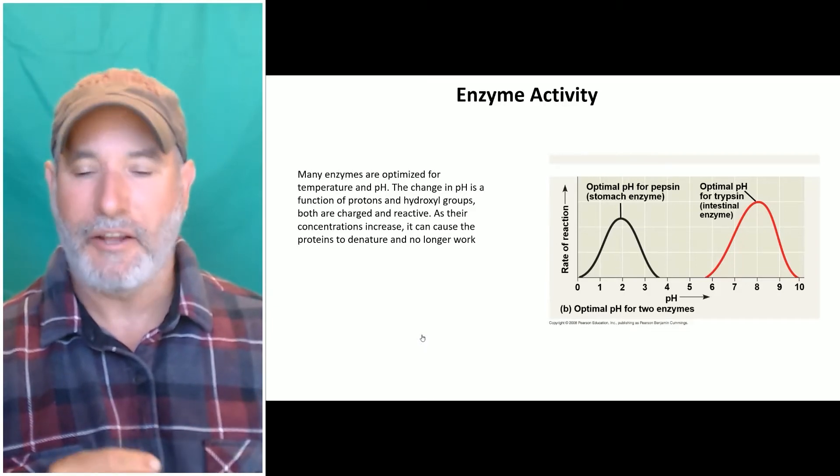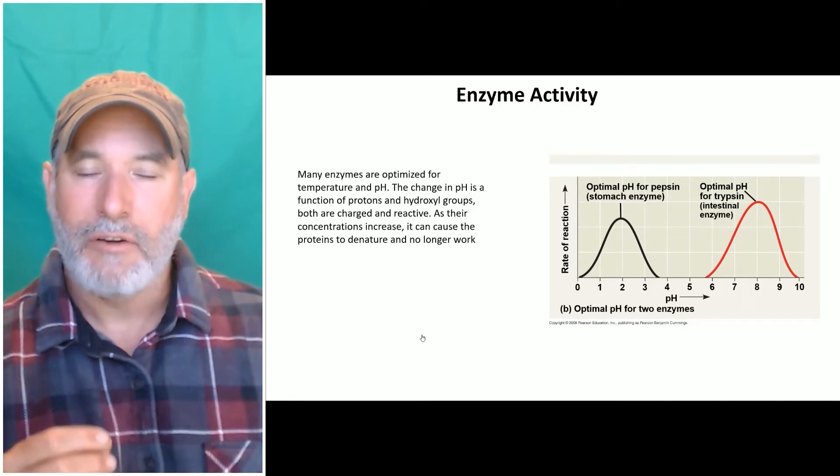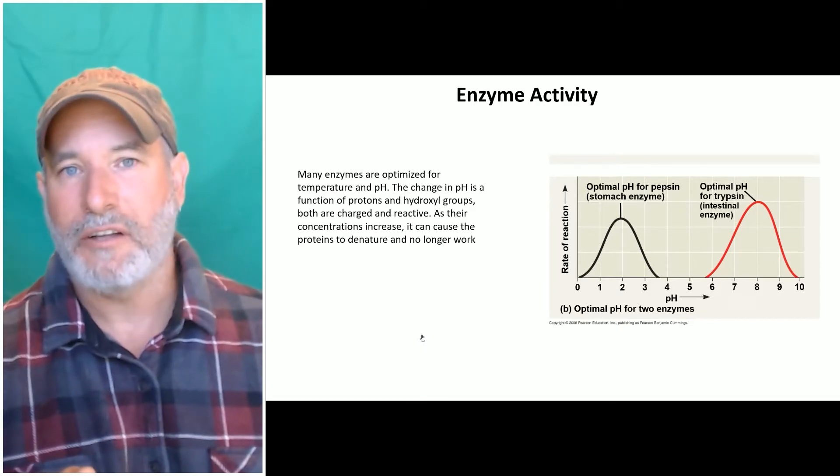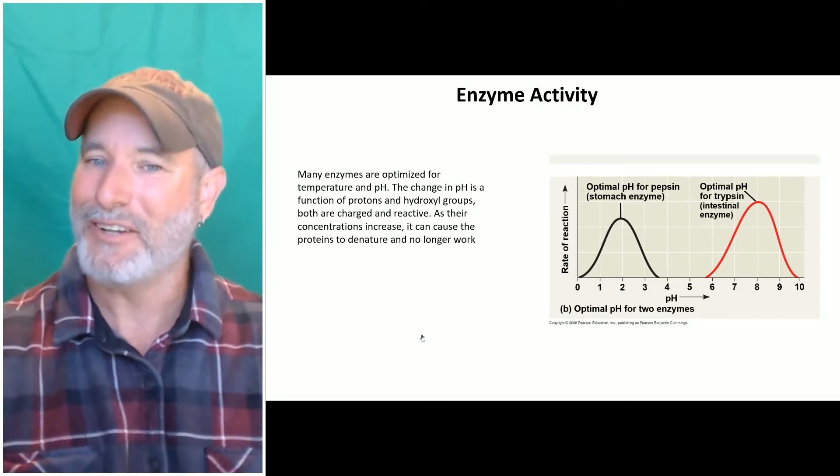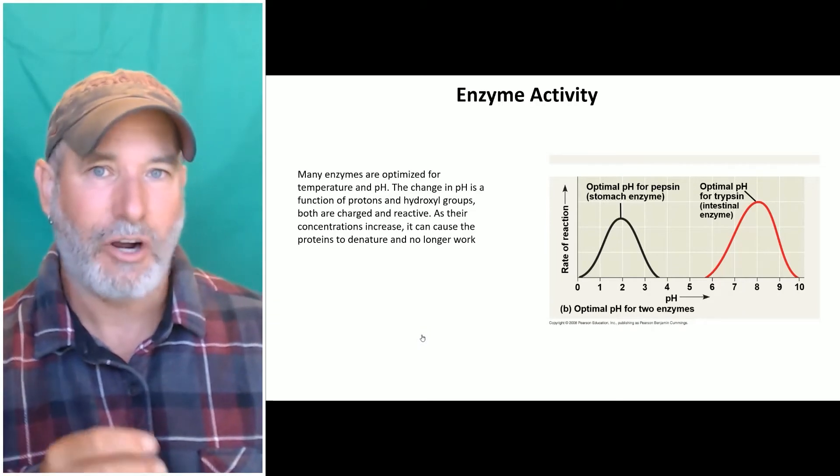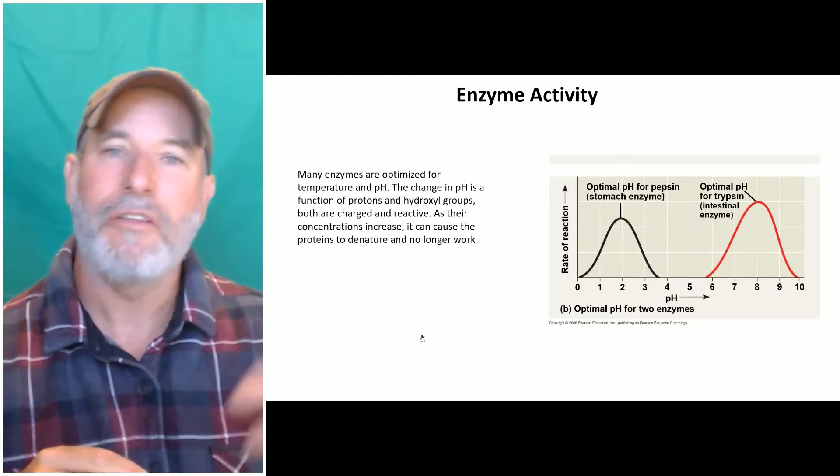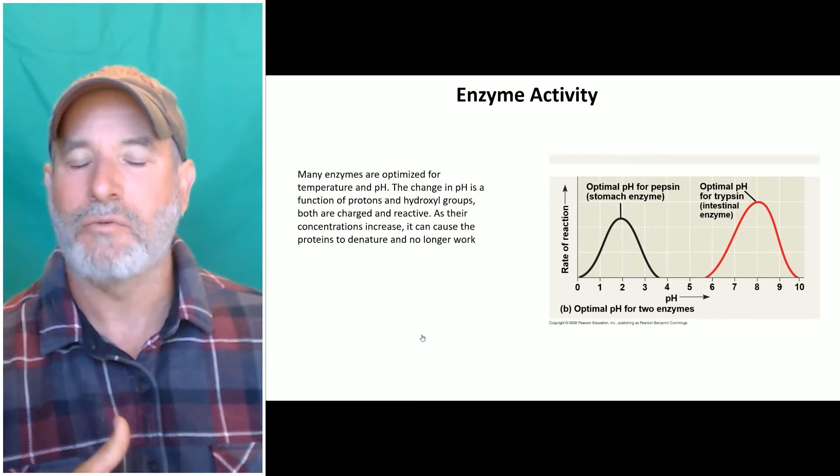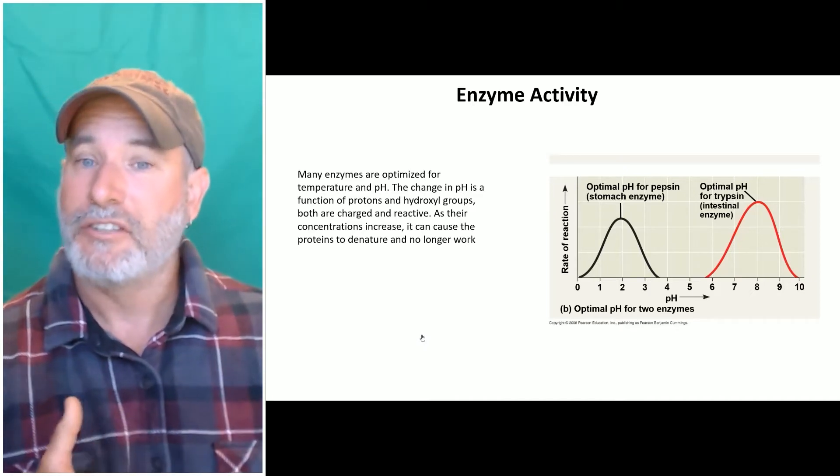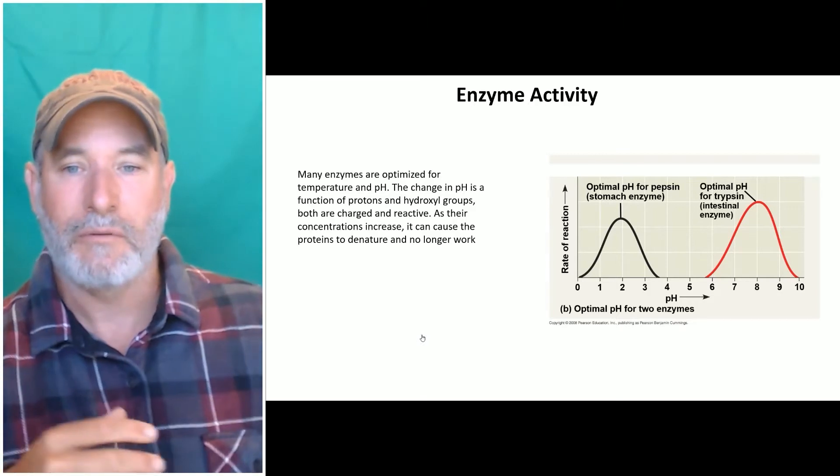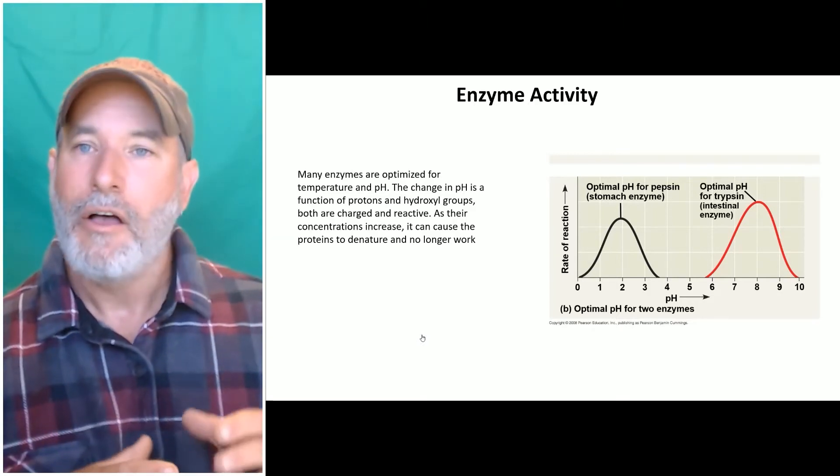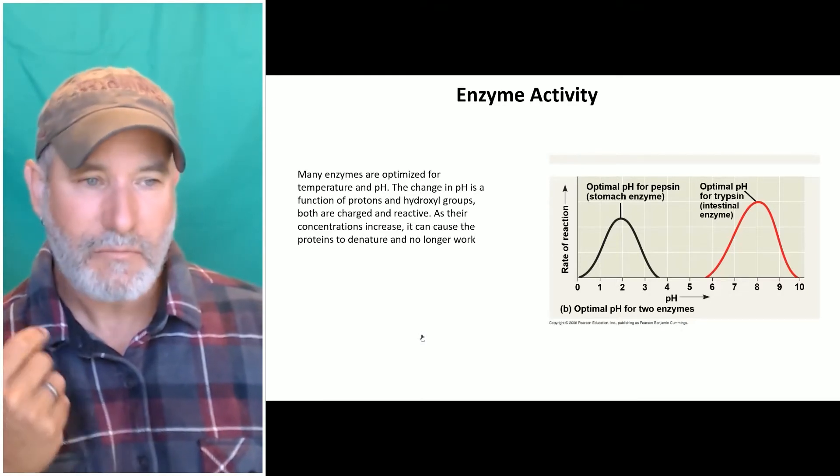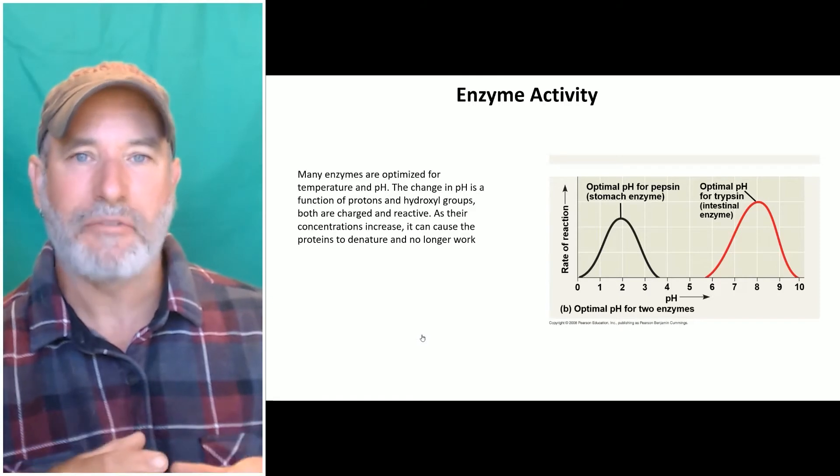Not only are enzymes optimized for temperature, they are optimized for pH. Remember, pH is a measure of the potential of your hydrogens. As you become more acidic, you have more protons in solution - they're positively charged and incredibly reactive. Go the opposite way, you become more alkaline, you get more hydroxyl groups - they are also reactive and it changes the charge too. That definitely affects enzymes by interacting with those functional groups.